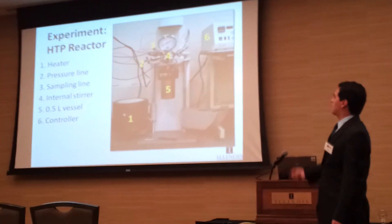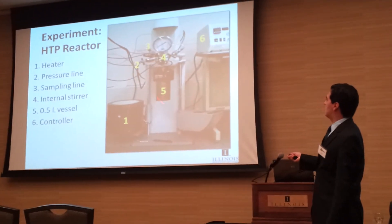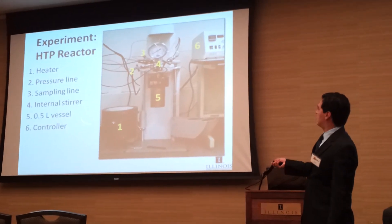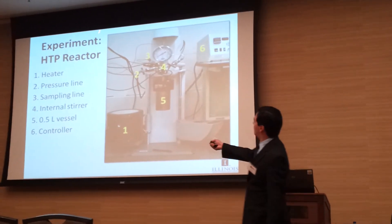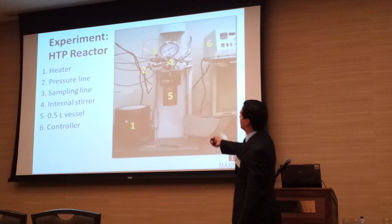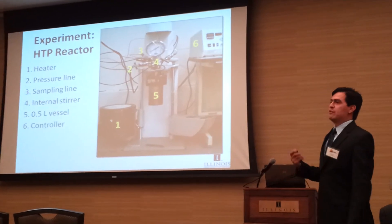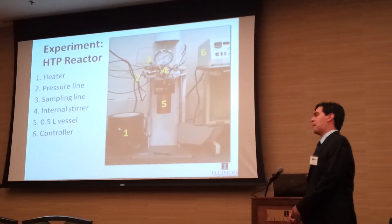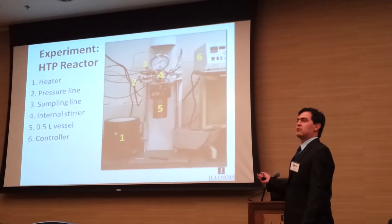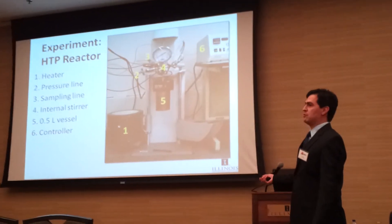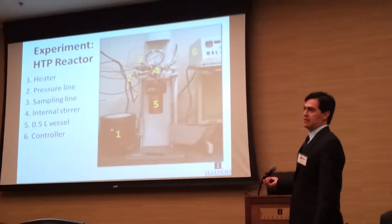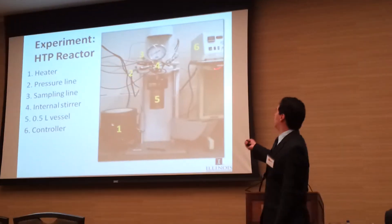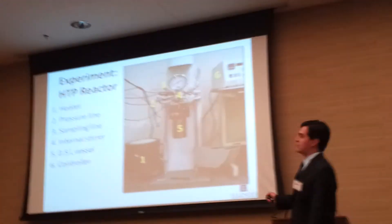This is our reactor — a small 0.5-liter reactor. It has a heater, and we have a pressurizing line. If we use glycerol as a hydrogen source, then we use nitrogen. If we don't use glycerol, we can supply hydrogen gas directly. The controller goes up to 500 psi once set up.